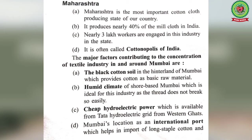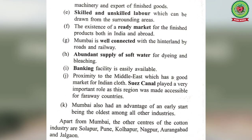Mumbai's location as an international port helps in the import of long-staple cotton and machinery, and the export of finished goods. Long-staple cotton, mostly from Saudi Arabian countries, is used for manufacturing high-quality cotton items. Skilled and unskilled labor can be drawn from the surrounding areas. There is a ready market for finished products both in India and abroad. Mumbai is well connected with the hinterland by roads and railways. Abundant soft water is available for dyeing and bleaching, and banking facilities are easily available.